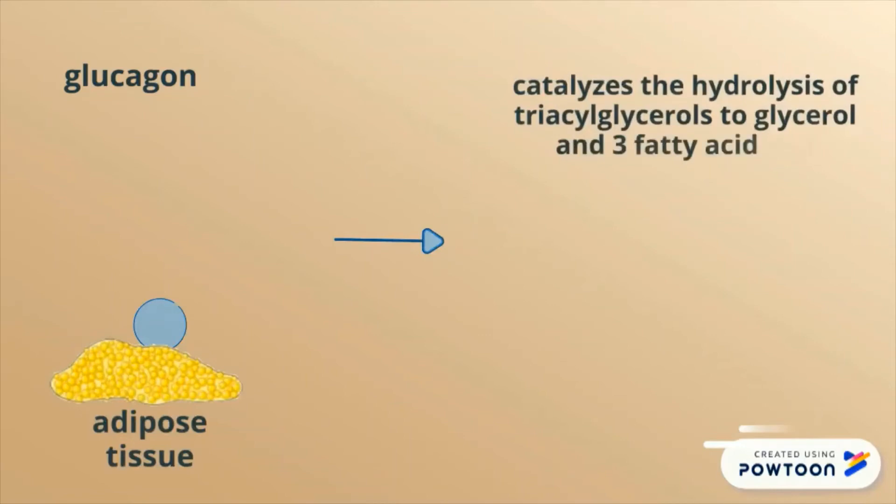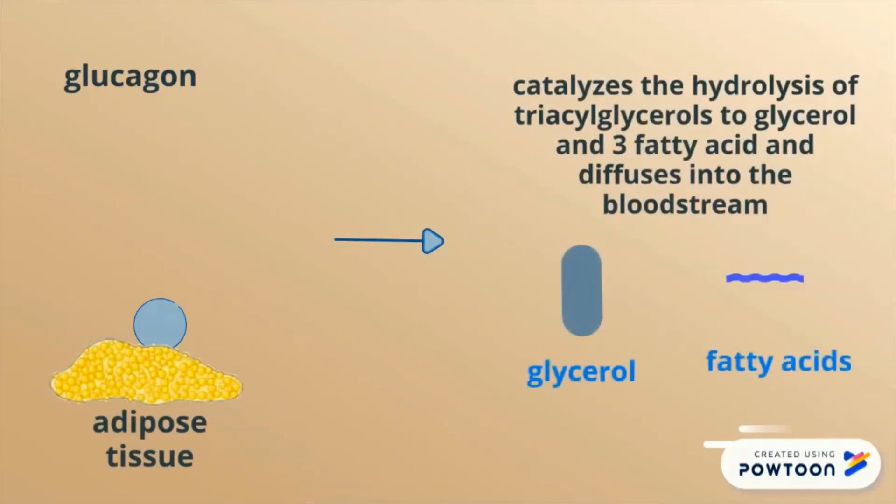The process of fat utilization will be stimulated when the hormone glucagon is secreted into the bloodstream and binds to the receptors of adipose tissue. This reaction will catalyze the hydrolysis of triacylglycerol to glycerol and fatty acid and diffuses into the bloodstream. Most glycerol goes into the liver.